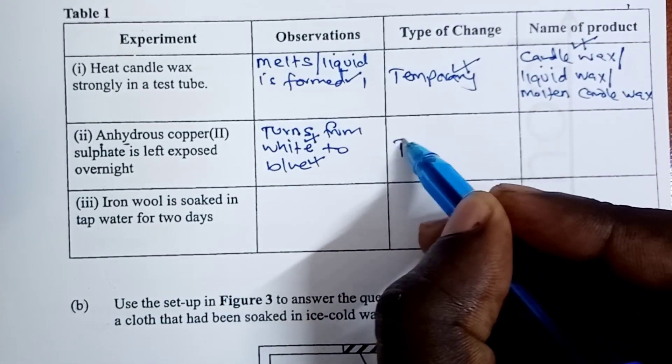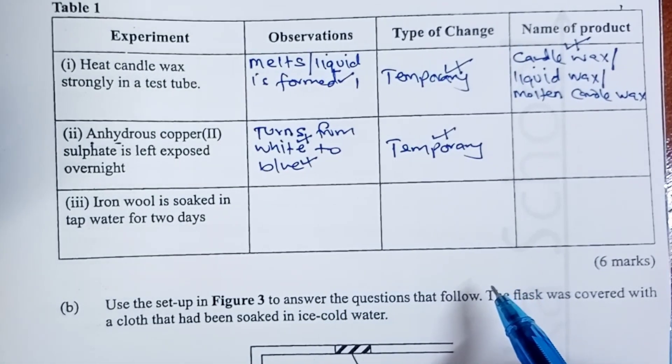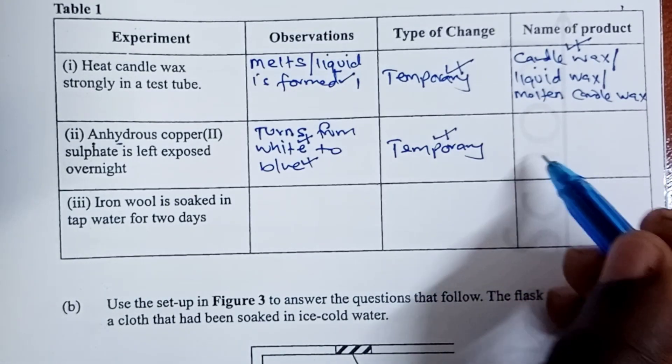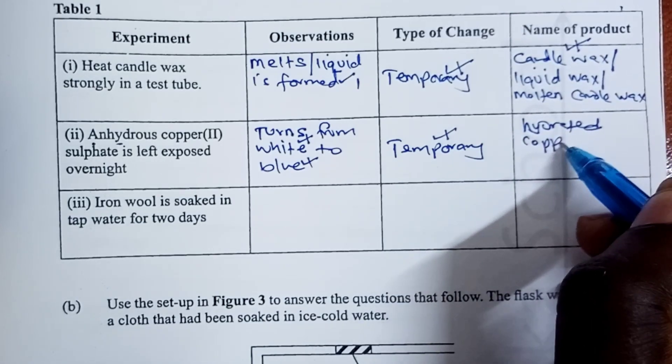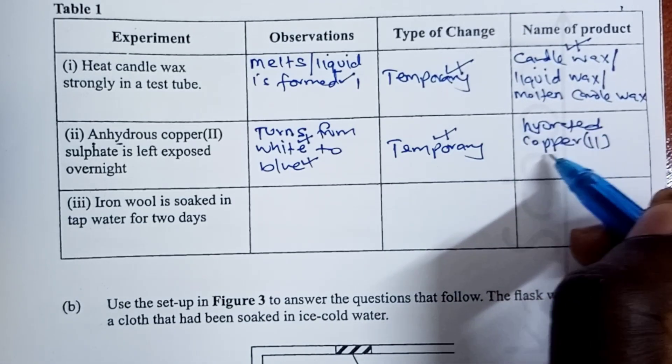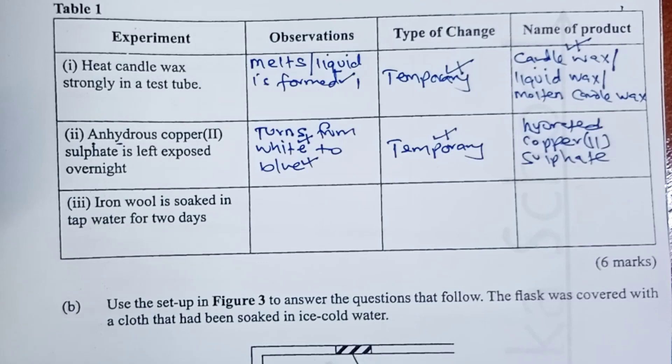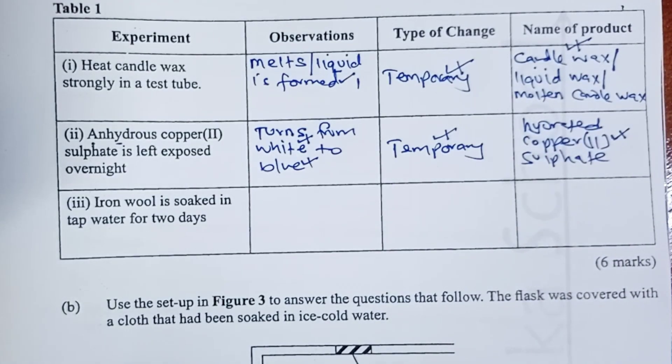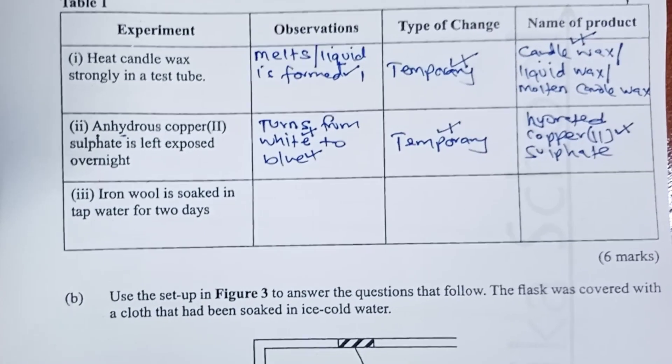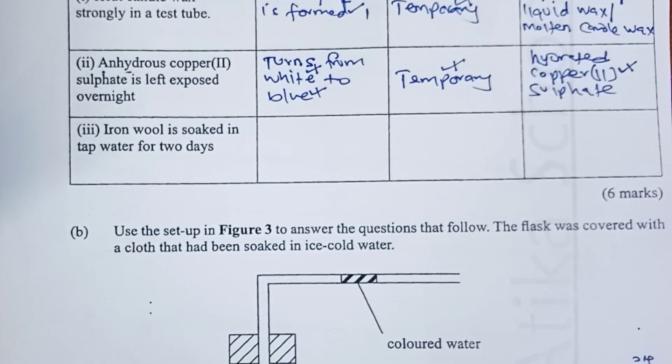Type of change, again, we know is temporary for a half a mark. And, we call the product hydrated copper-2 sulfate. Some students would also call it copper-2 sulfate pentahydrate. All that is allowed as name of the product for another half a mark. Total marks for experiment two is also two marks.